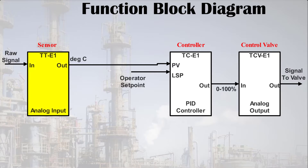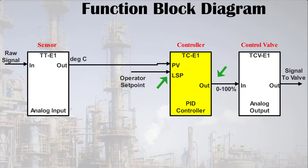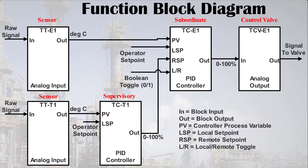Here on the left, we see the temperature transmitter TTT1, converting a raw signal from a sensor to a signal in degrees C. That signal becomes the process variable, or PV, of the controller TCE1, which also receives a local set point. The controller's output of 0 to 100% goes to the function block for CVE1, which converts it to an electrical signal to the valve. This is our subordinate loop. When we bring in the components of the supervisory loop, we have another sensor input, TTT1, and another controller, TCT1. The output of the supervisory controller TCT1 becomes the remote set point for the subordinate controller TCE1, just as we did when diagramming this as a P&ID.